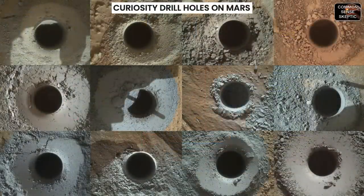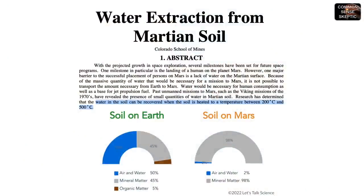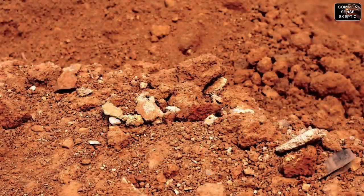If there's no surface ice or easily accessible pockets of ground ice, now you're talking about digging up hydrated minerals in the soil — the worst-case scenario. Not only does moisture comprise a mere two percent of Martian regular minerals, they would have to heat those materials to 200 to 500 degrees Celsius to release the water molecules.